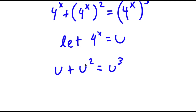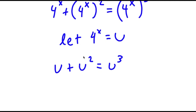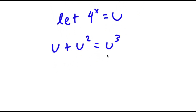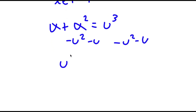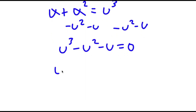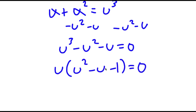To solve this, I'm going to start by subtracting u squared and u on both sides. These two cancel out, and now I have u to the power of 3 minus u squared minus u is equal to 0. Now I can factor out u. So I have u times u squared minus u minus 1 is equal to 0.